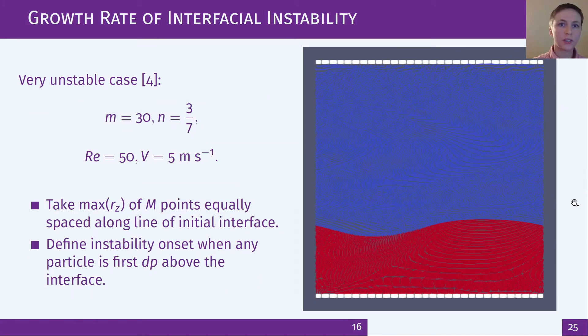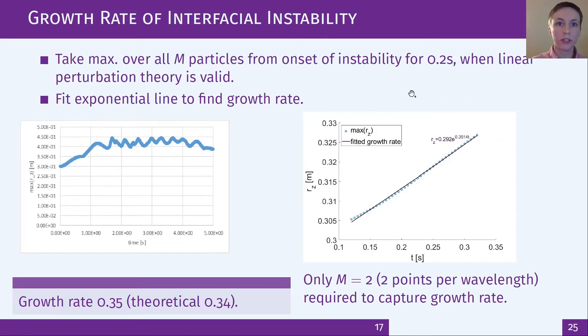I then did an investigation into the instability growth rate. I chose this very unstable case in a square domain with a large difference in viscosities. I choose m sample points that are initially on the line of the interface and track their position across the channel with time. I define the onset of the instability to be when one of these particles is first a particle spacing away from the original interface. I take the maximum over these sample points and fit an exponential line for a small time after the onset of instability so that the linear perturbation theory is still valid. I find a growth rate of 0.35 which is really close to the theoretical value of 0.34 and it demonstrates that SPH can capture this behavior and possibly be used to investigate the development of this instability where other methods are unable to.